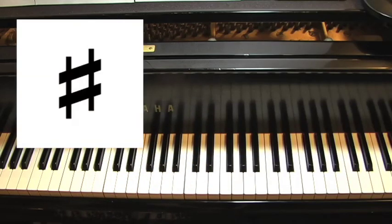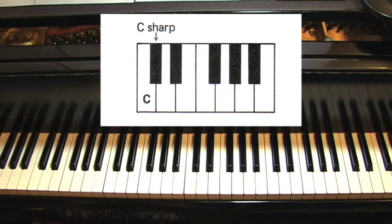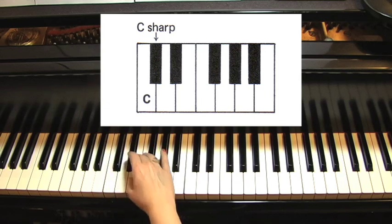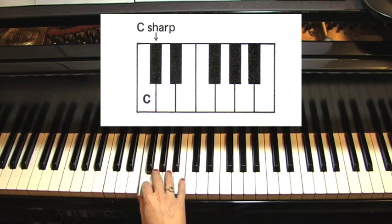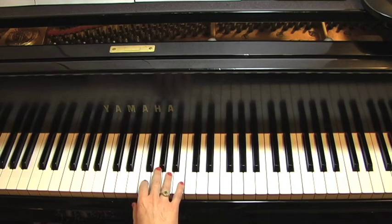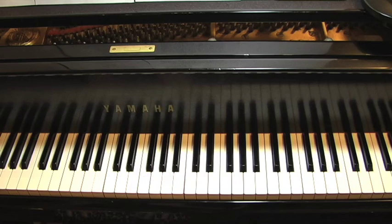Now you see a new symbol — it's a sharp. It looks a little like a slanted tic-tac-toe board or a number sign. In music notation, when you see a sharp before a note, that raises a key to the nearest one on the right, a half step up. So C would go to C sharp, D goes to D sharp, E would go to E sharp. Look at how E sharp is actually another name for F — that's called enharmonic, so we call E sharp and F enharmonically the same. Just like you can have double flats, you can also have double sharps, but that's for another lesson.